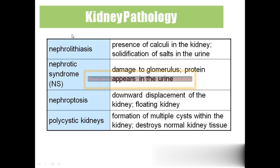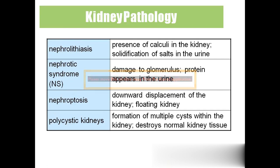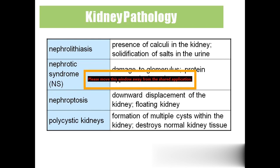Nephrolithiasis: 'nephro' means kidney, 'lith' means stone, and 'iasis' means abnormal condition — so it is the abnormal condition of kidney stones, meaning presence of calculi or solidification of salts. Nephrotic syndrome is damage to the glomerulus. Nephroptosis: 'ptosis' means falling — when kidneys are heavily filled with urine, they fall from position; also called a floating kidney.